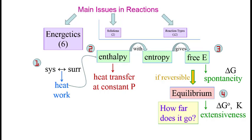If a reaction is reversible, it can reach equilibrium. Where the equilibrium lies tells us about the reaction's extensiveness, which is characterized by the standard free energy change, delta G zero, and the equilibrium constant, K. This answers the question, how far does it go?